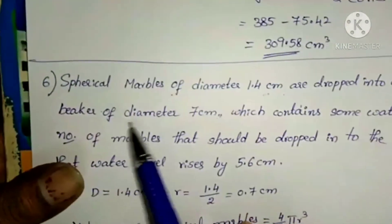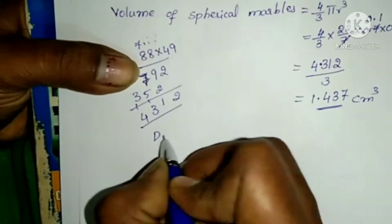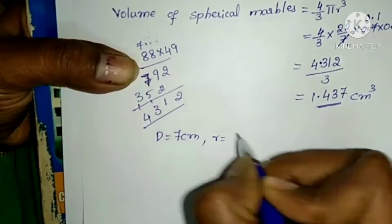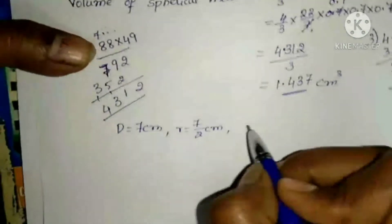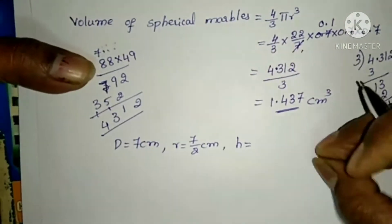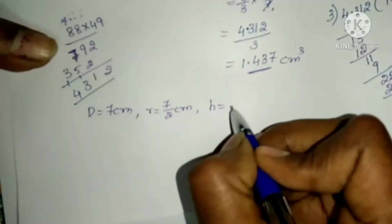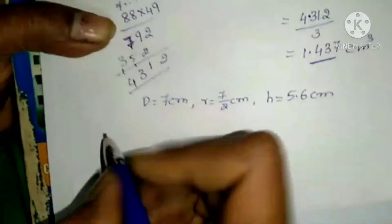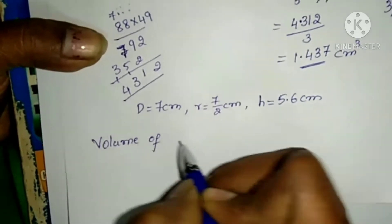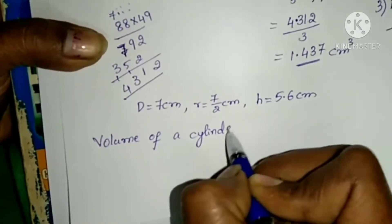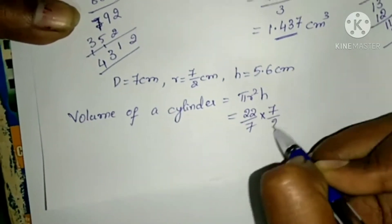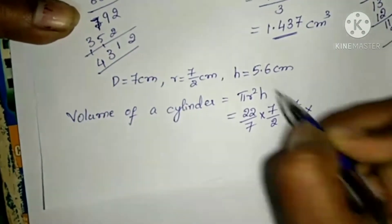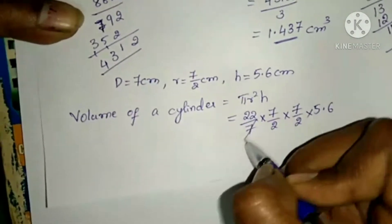Now for the cylindrical beaker: diameter is 7 cm, so radius is 7/2 cm. The water level rise is 5.6 cm, which is the height. Volume of cylinder equals π r² h = 22/7 × (7/2)² × 5.6. After cancellation of 7s: 11 × 7 × 28 = 77 × 28.